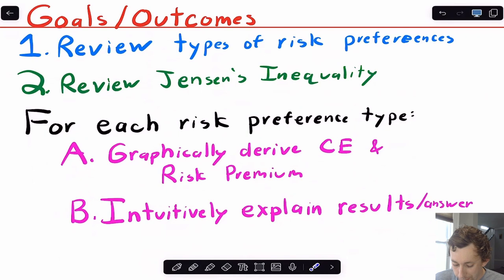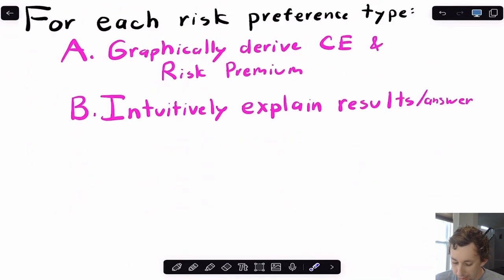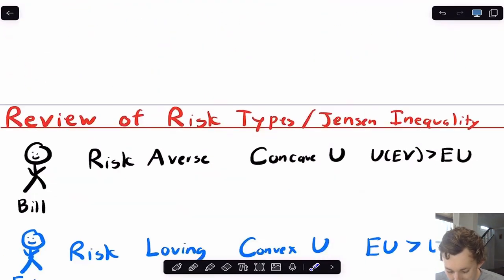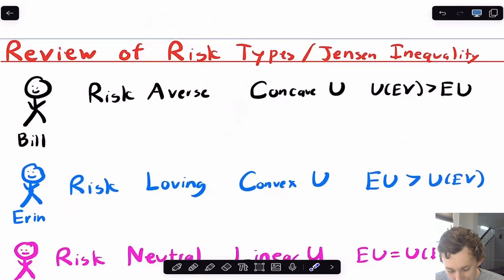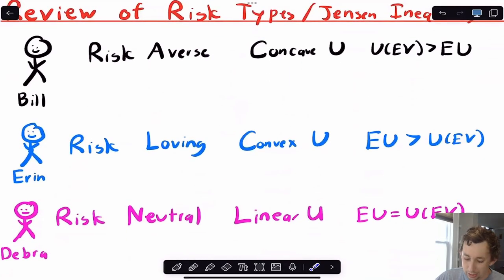For each of these risk preferences, we're going to graphically find and derive the certainty equivalence and the risk premium. We're going to talk intuitively about why it makes sense that for each risk type, we get a certain certainty equivalence as well as a risk premium. The three types of people we're going to do — timestamps will be below for each person.